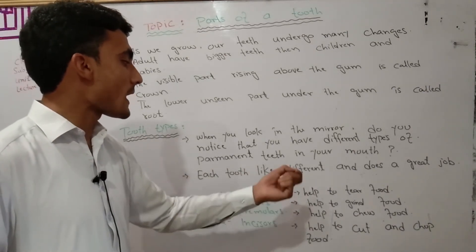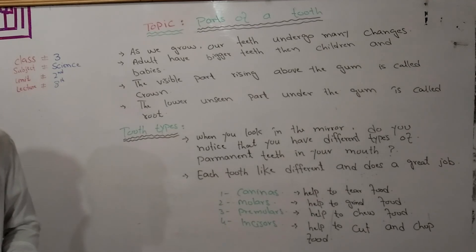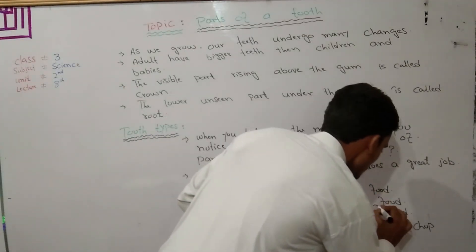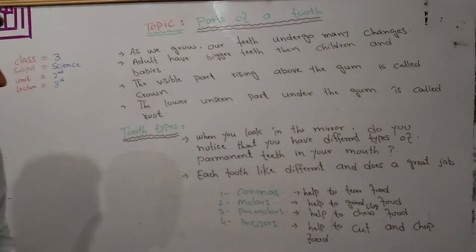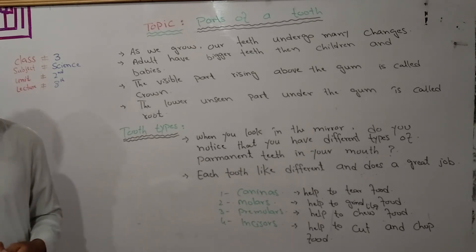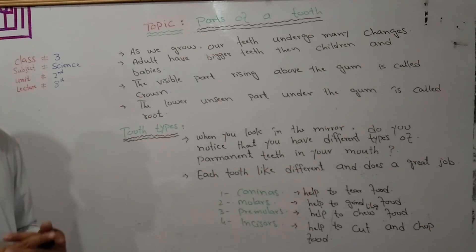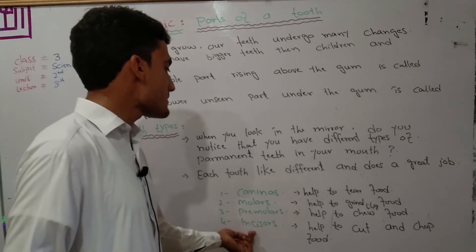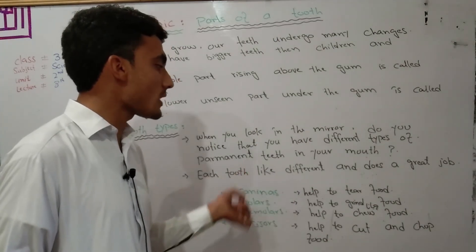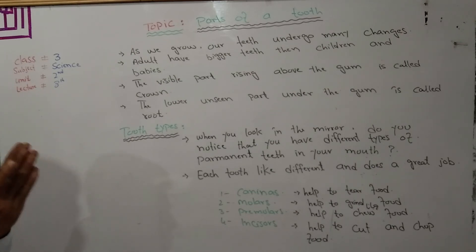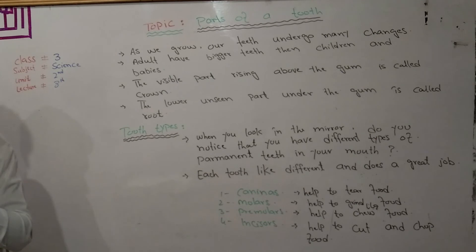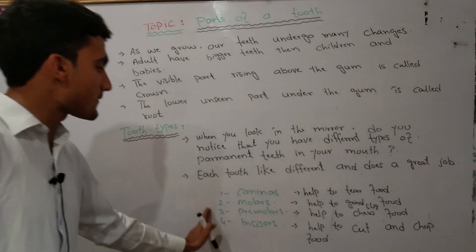Premolars help to chew food. Incisors help to cut and chew food. So there are four types of teeth.